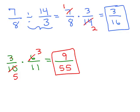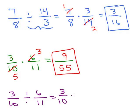Now let's do a problem that's actually division — 3 tenths divided by 6 elevenths. We write 3 tenths again and multiply by the reciprocal, which is 11 sixths. Now I see if I can cancel anything: 3 goes into both 3 and 6, so I cancel those, leaving 1 and 2. I get 1 times 11 in the numerator and 10 times 2 in the denominator — that's 11 twentieths.